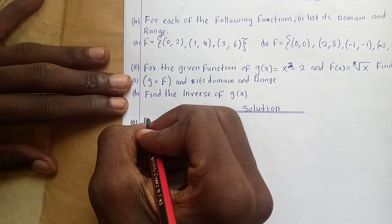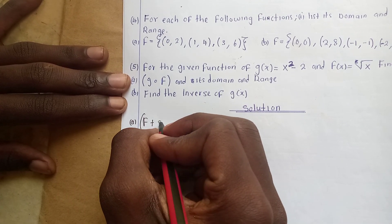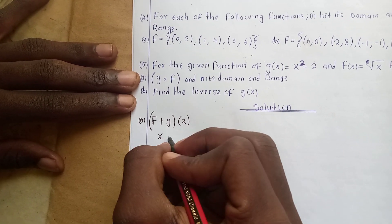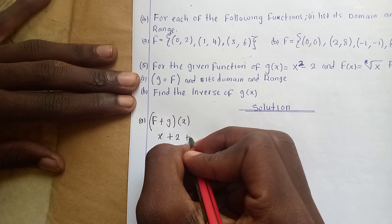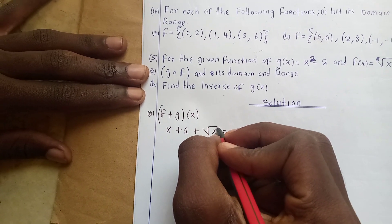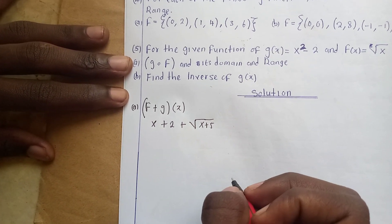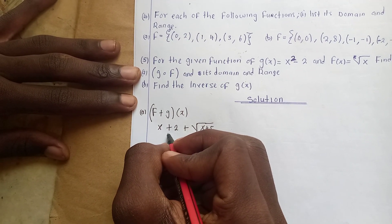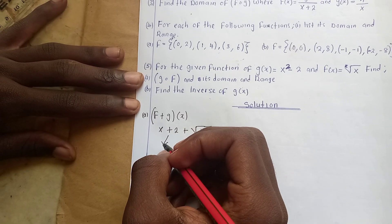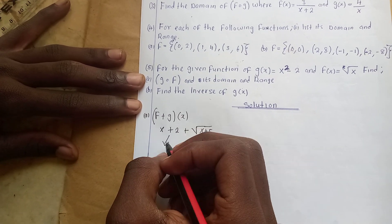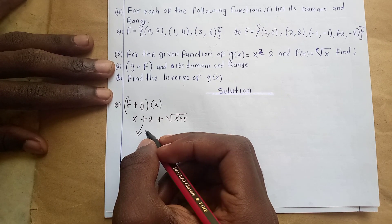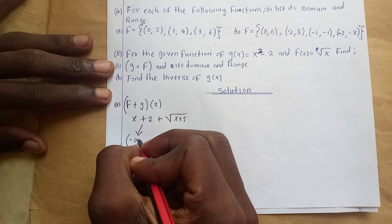So f plus g evaluated at x: the function f(x) is simply x plus 2, and the function g(x) is simply √(x + 5). Now, the domain of f(x) — since this is just a polynomial expression — its domain comes from negative infinity to positive infinity.